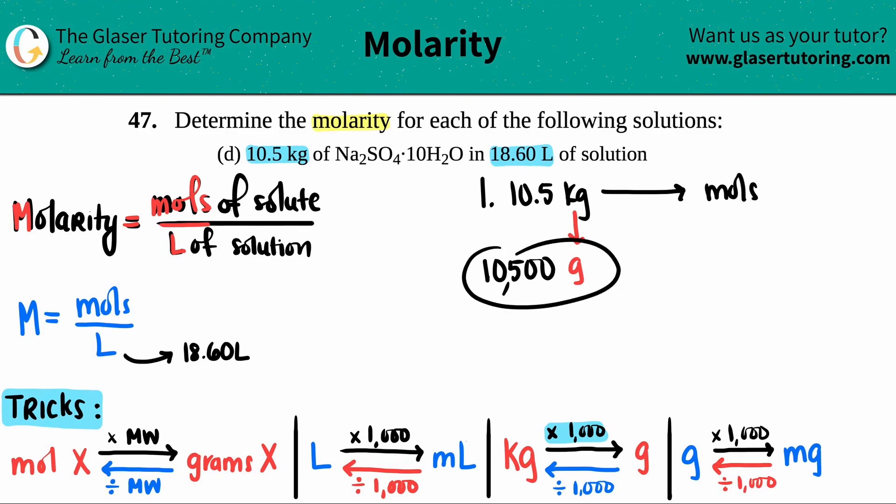Now I have to take the gram value and still try to convert it into moles. How do I go from grams to moles? That's this little trick over here. From a gram value I can go to moles, and I label it as x, meaning that you could do any element or compound.